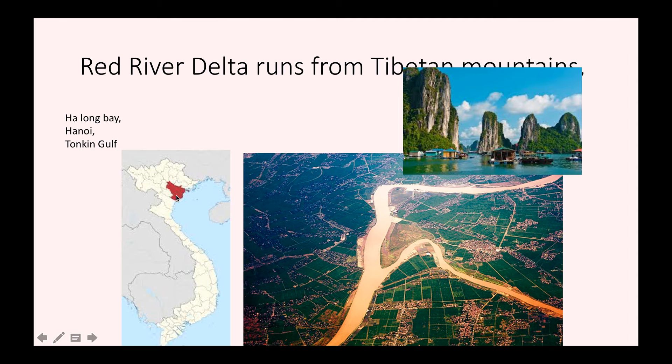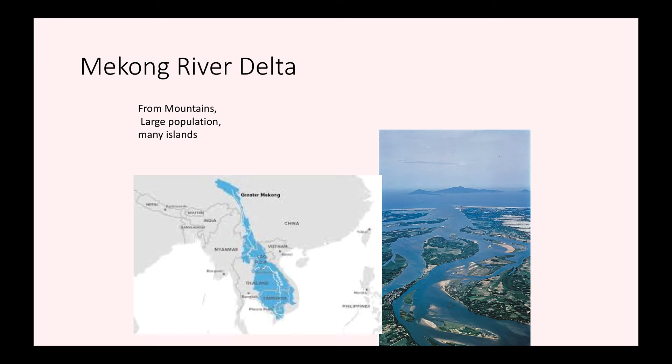First we'll look at the Red River Delta, which is at the top of Vietnam or at the top of the S. It's famous for Ha Long Bay, which is very popular with tourists, shown in this picture. The capital of Vietnam, Hanoi, is on the Red River Delta. One thing to remember is that it runs into the Gulf of Tonkin. So if you think of the Red River, think of Ha Long Bay and the Tonkin Gulf. You can probably see from this photo why they call it the Red River — all the dirt or silt in the river gives it a reddish tinge.